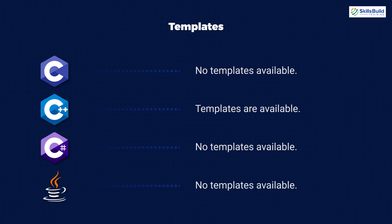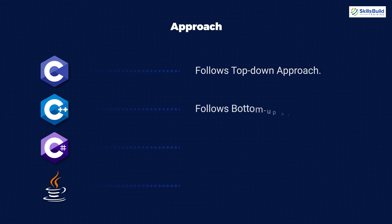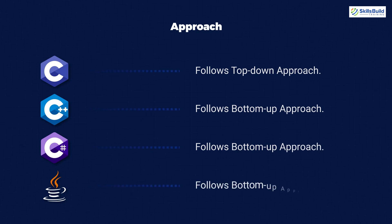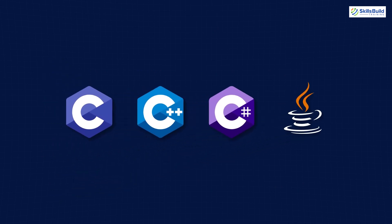C# does not have templates and neither does Java — you have to do everything on your own, and that is the beauty of both Java and C#. Finally, in terms of programming approach: C follows a top-down approach, while C++, C#, and Java all follow a bottom-up approach.